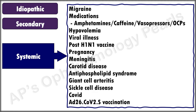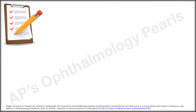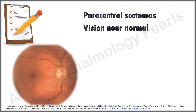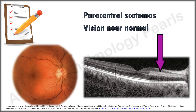CRVO is the most common cause of PAM. The typical clinical history of idiopathic PAM is usually that of an acute onset of paracentral scotomas, blurred central vision, and difficulty in focusing. Vision is normal or slightly reduced. Fundus examination can be normal or associated with deep, smooth, greyish lesions.